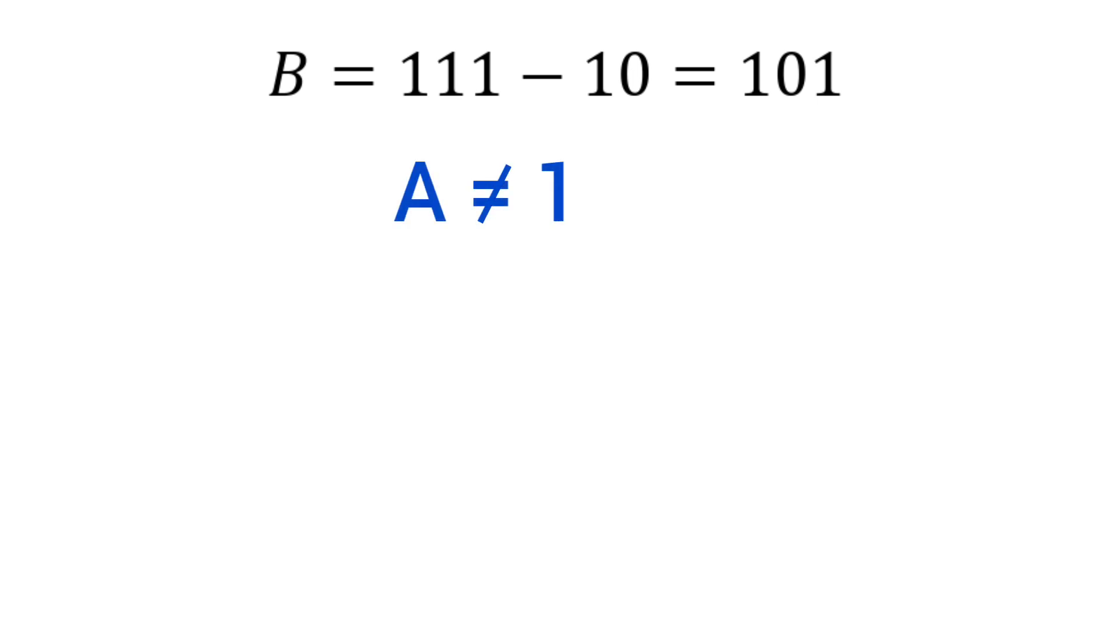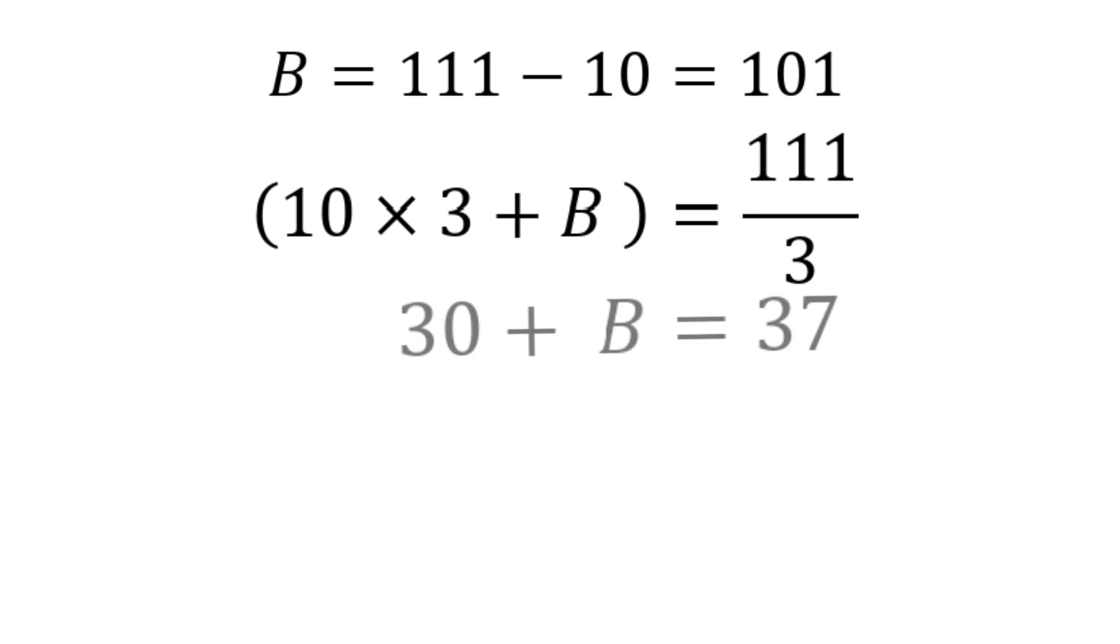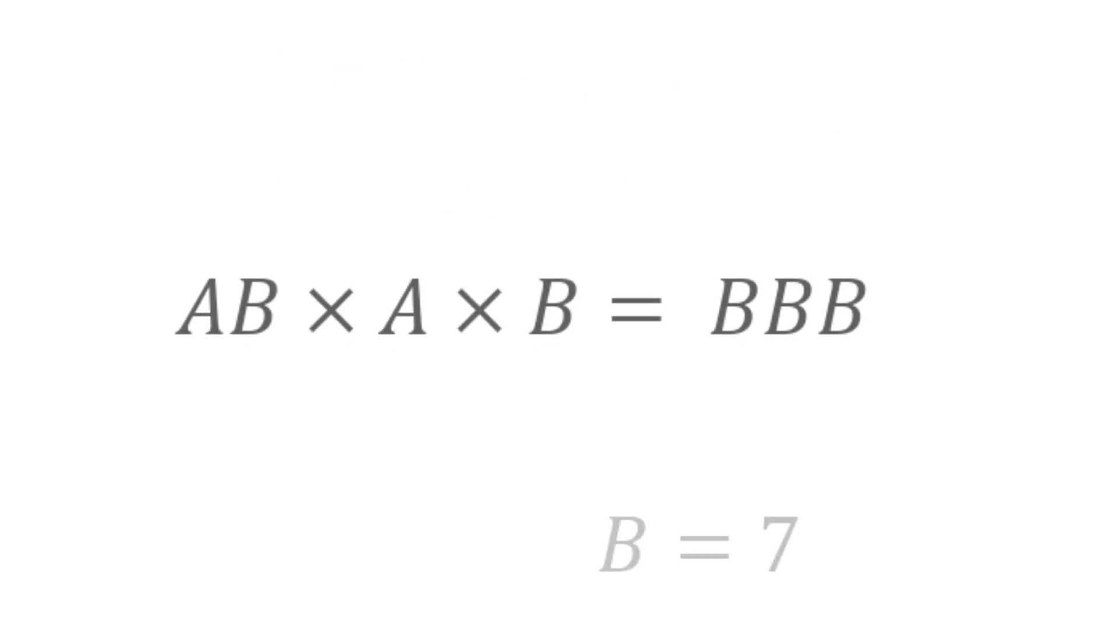Let's put A equals 3. Then we have 10 into 3 plus B equals 111 by 3. So 30 plus B equals 37. B equals 37 minus 30. Therefore, the value of B is equal to 7, which satisfies the given condition.